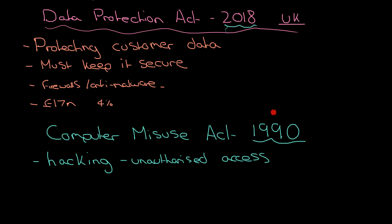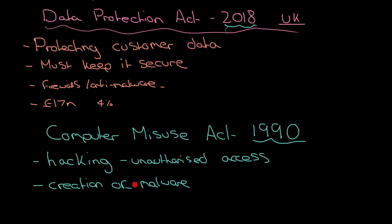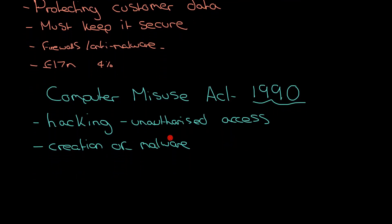One thing to note: you tend to always put a date after you give the name of a law, because there can be different versions of the same name, and it's important to know which one we're referring to. The Computer Misuse Act covers hacking and unauthorized access, but also the creation of malware. If you create viruses and distribute them, you can be prosecuted. And if you create malware and somebody else distributes it, you can still be prosecuted under the Computer Misuse Act.